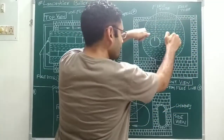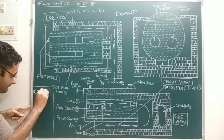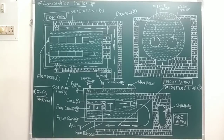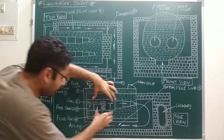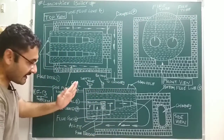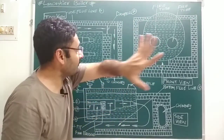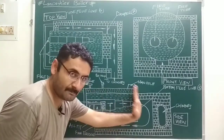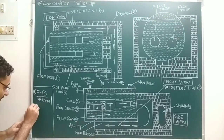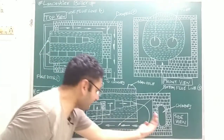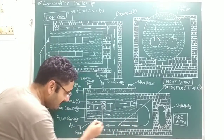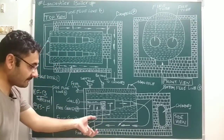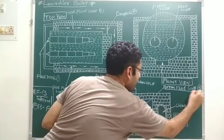When flue gases move from front to back inside the fire tubes, the internal portion of the water surrounding the tubes is heated. After reaching the back, the flue gases then travel from back to front through a passage known as the bottom flue line.